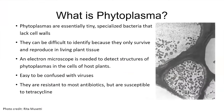The fourth pathogen is phytoplasma. Phytoplasma is a bacteria-like organism that lacks cell walls. They are not easy to identify because they can only survive and reproduce in living plant tissue — meaning we cannot culture them on plates. One method to identify them is to use electron microscopy to distinguish phytoplasma from virus, since the symptoms can be easily confused. In addition, they are resistant to most antibiotics but are susceptible to tetracycline.